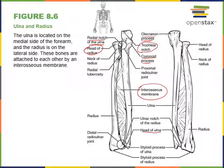At the distal end of the radius, there is an ulnar notch that accommodates the head of the ulna. The head of the ulna is at the distal epiphysis, whereas the head of the radius is at the proximal epiphysis. The neck of the radius is the narrow region just distal to the head. The radial tuberosity is a rough projection of bone that serves as the insertion point for the biceps brachii, the muscle on the anterior brachial region that flexes the elbow joint.